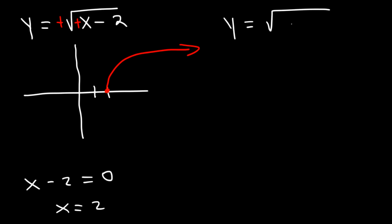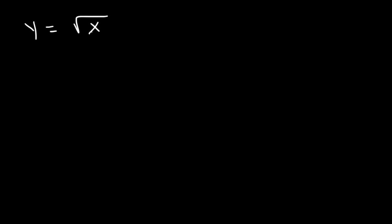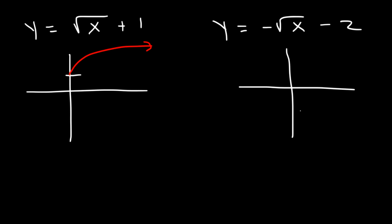If we had the square root of x plus 3, this graph will be shifted three units to the left and travel towards quadrant 1. For the square root of x plus 1, the graph goes up one unit and opens towards the right. And for negative square root of x minus 2, the graph shifts down two units and, due to the negative sign, reflects to travel towards quadrant 4.